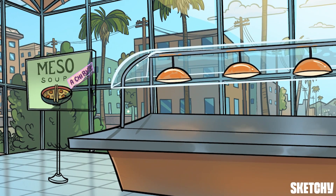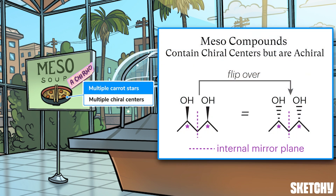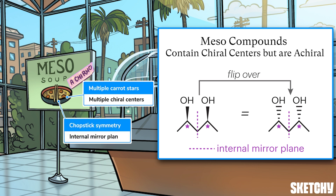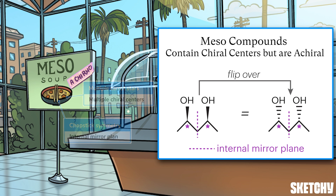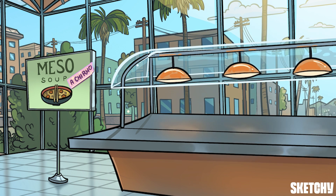Speaking of multiple chiral centers, there's a special thing that can happen when a molecule has multiple chiral centers and is highly symmetrical: it might be a meso compound. Meso compounds have multiple chiral centers, symbolized by multiple carrots shaped like chiral center indicators, but what makes them special is an internal mirror plane — symbolized by chopsticks creating a line of symmetry in the soup. This means if you could fold the molecule in half, the halves would match perfectly. Despite containing chiral centers, meso compounds are achiral overall, because any molecule with an internal mirror plane can be superimposed on its mirror image.